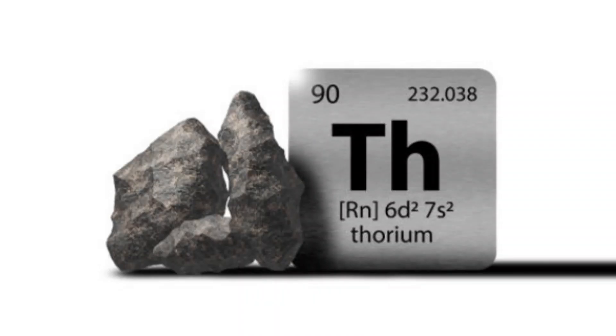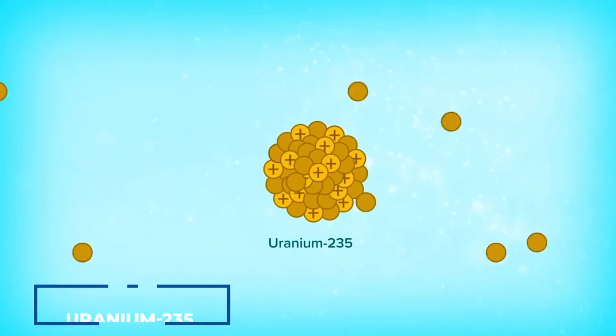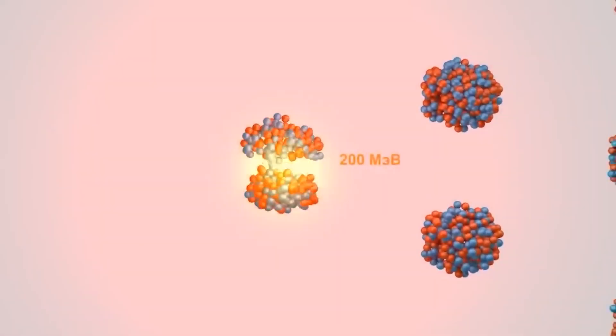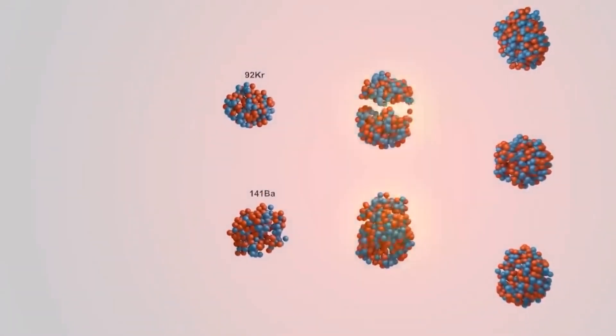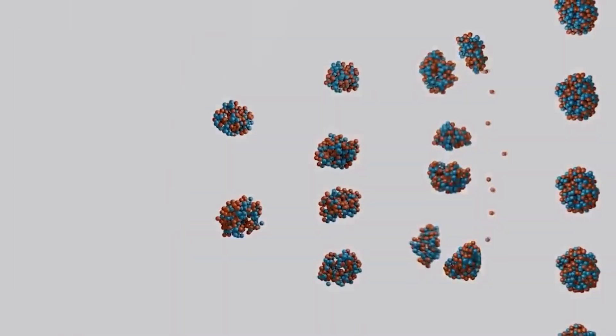One of thorium's notable properties is its high density, which is exceeded only by a few other elements such as uranium and plutonium. It is also a highly radioactive element with a half-life of about 14 billion years for its most stable isotope, thorium-232.